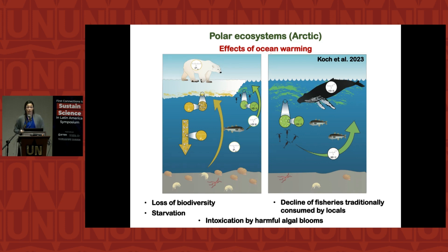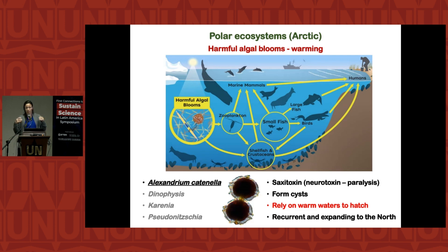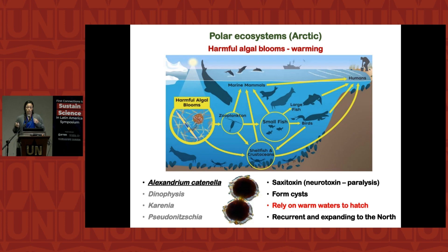Another problem is intoxication from harmful algal blooms (HABs). Most HAB species benefit from warming and prefer stratified waters to grow. In the arctic, this is a major issue because most people there depend on ocean food. If a toxic bloom is present, it reaches people and becomes a serious public health problem. Harmful algal blooms are formed by algae that produce toxins or by algae that don't produce toxins but harm the environment in other ways.